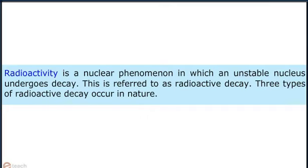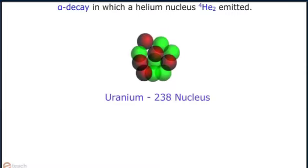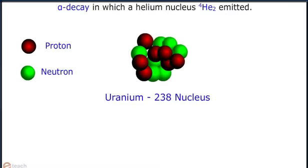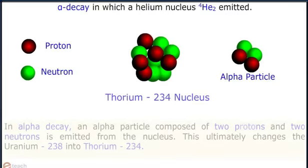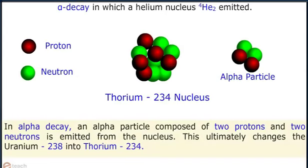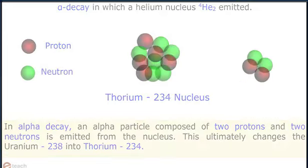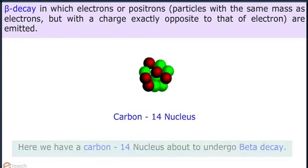Three types of radioactive decay occur in nature. Alpha decay, in which a helium nucleus 4He2 is emitted. In alpha decay, an alpha particle composed of two protons and two neutrons is emitted from the nucleus. This ultimately changes uranium-238 into thorium-234.